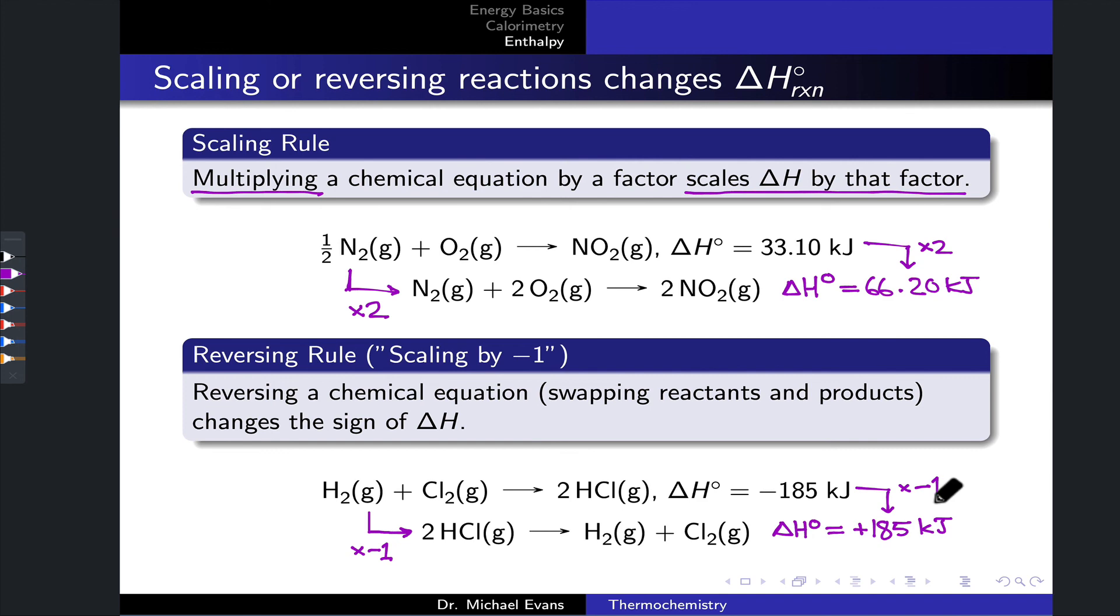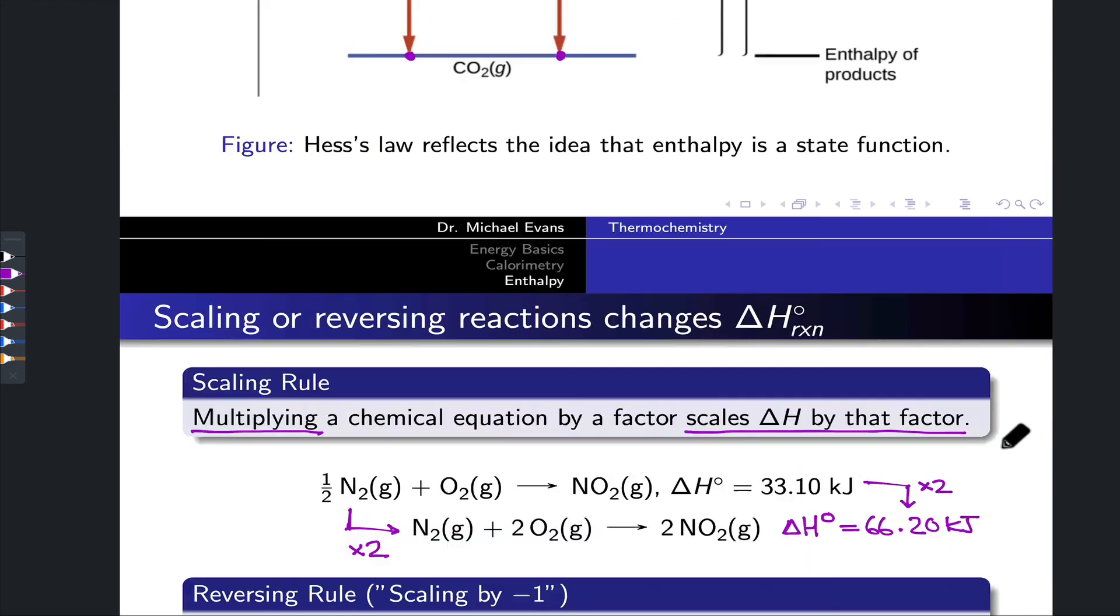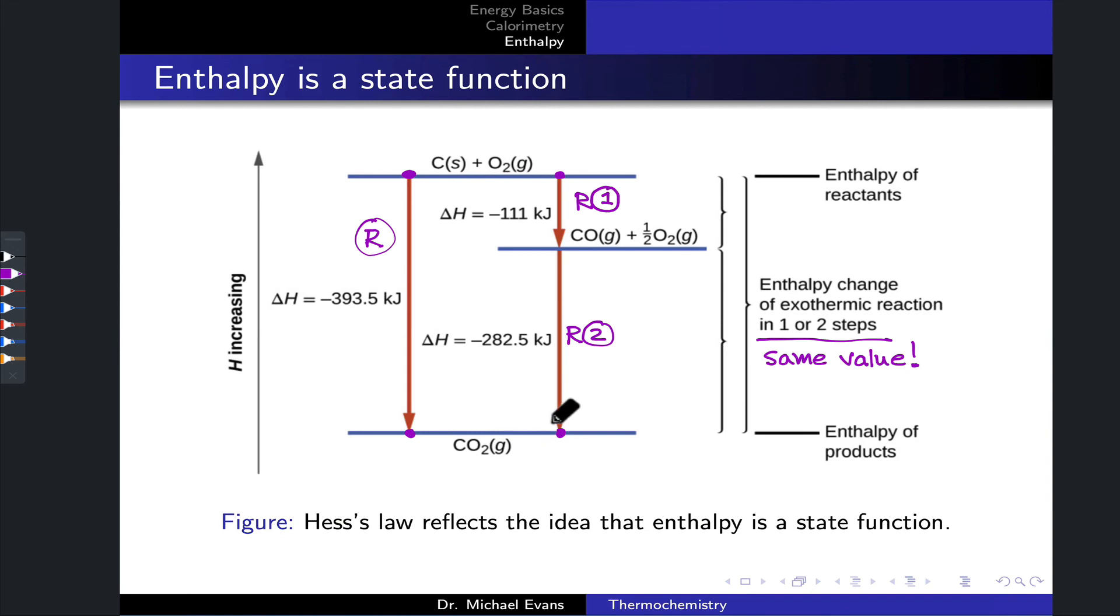Another way to understand the reversing rule uses a kind of diagrammatic understanding. If my enthalpy change is negative 393 kilojoules in going from these reactants to these products, then clearly going in the opposite direction, I'm going to be traveling, quote unquote, the same distance upward in enthalpy, just in the opposite direction, so that the enthalpy change here is now positive 393.5 kilojoules. Just took that sign and flipped it.